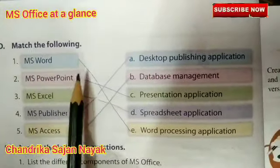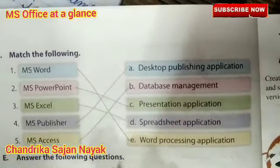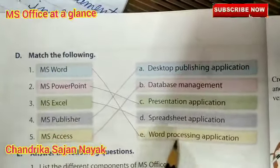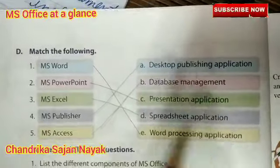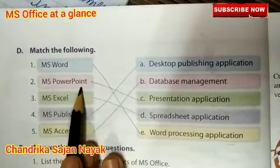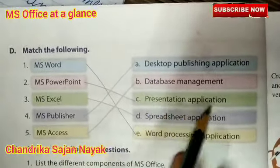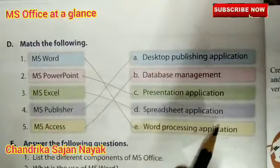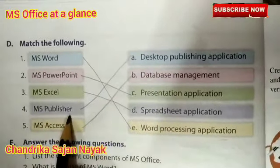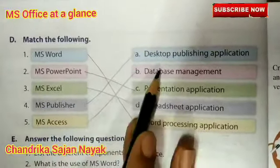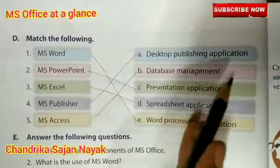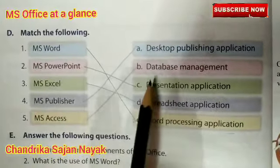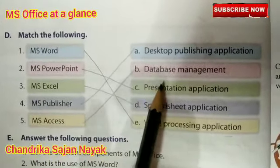Now we will do Match the Following. Number one: MS Word is a word processing application. Number two: MS PowerPoint is a presentation application. MS Excel is a spreadsheet application. MS Publisher is a desktop publishing application. MS Access is a database management application.